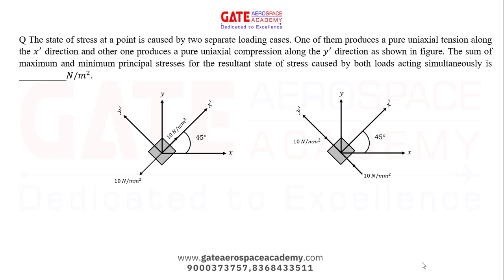When both loads act simultaneously, the magnitudes of the principal stresses are the same but the signs are opposite — one positive and one negative. Since they are asking for the sum of maximum and minimum principal stresses, and the magnitude is the same but signs are opposite (plus and minus), adding both gives zero.